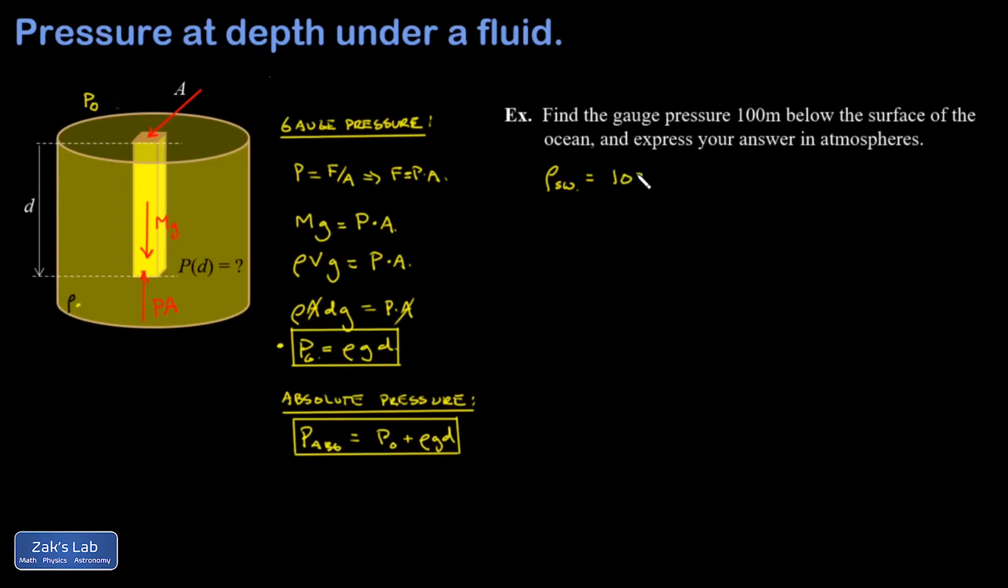I'm asked for gauge pressure, which means I use the first formula: P equals ρgd. And that's 1030 kg/m³ times 9.8 m/s² and a depth of 100 meters.